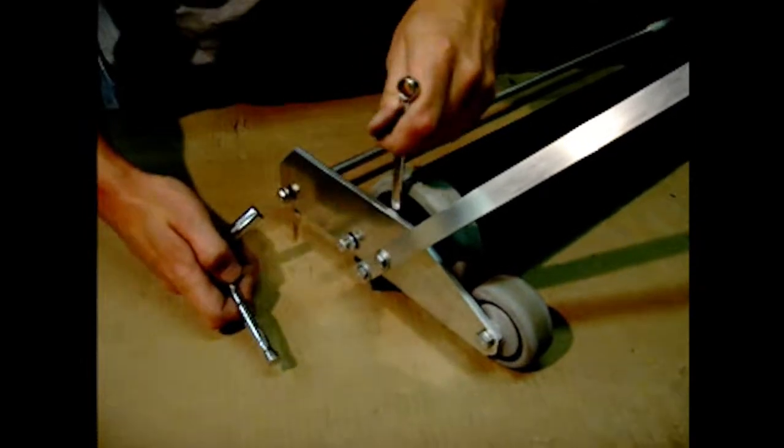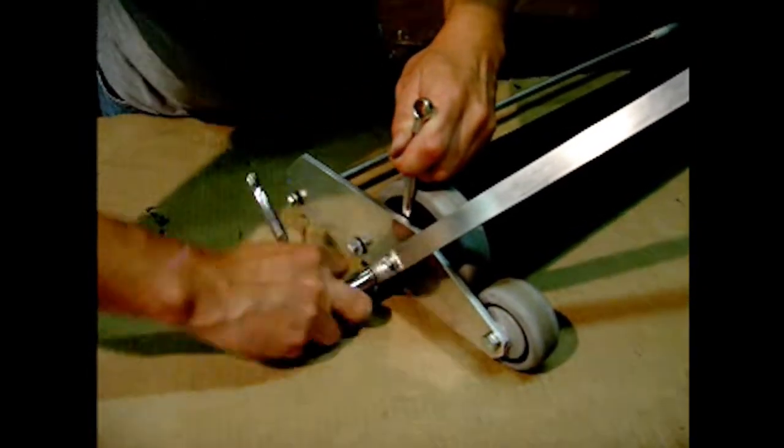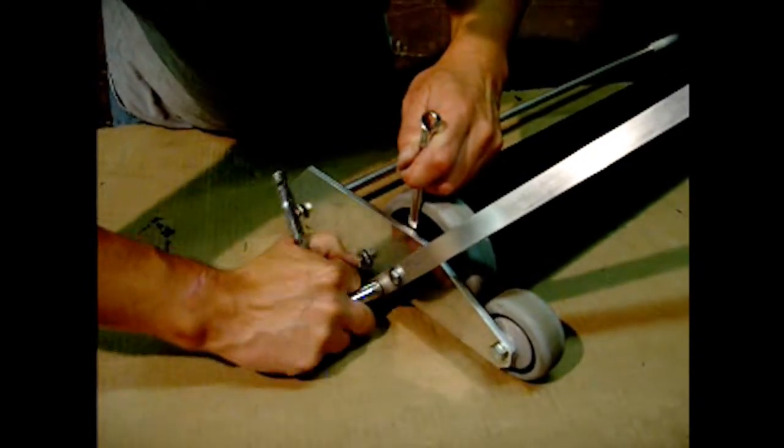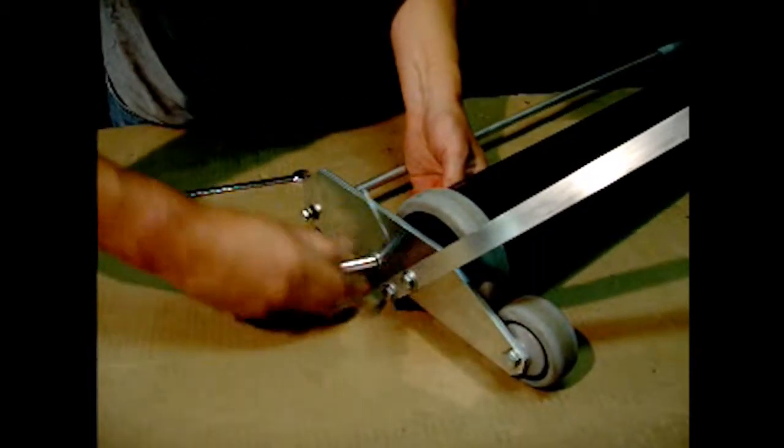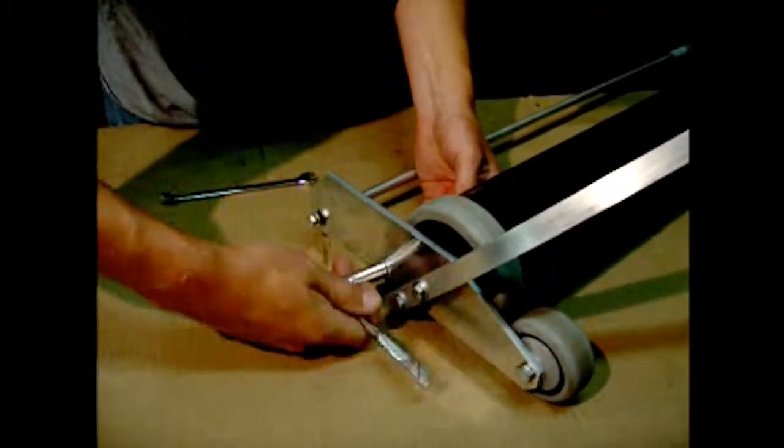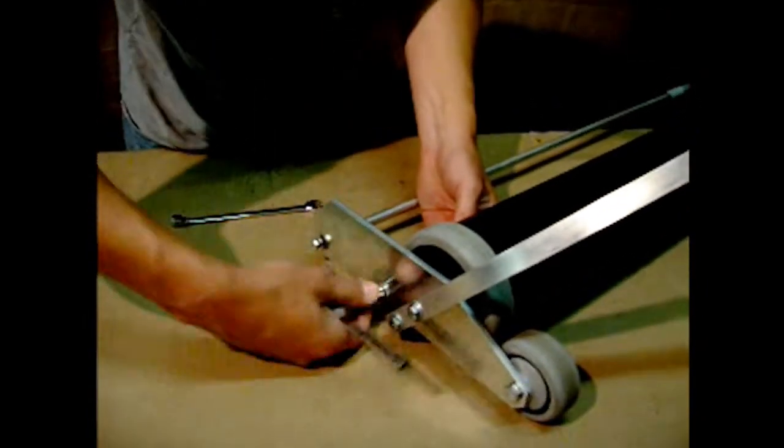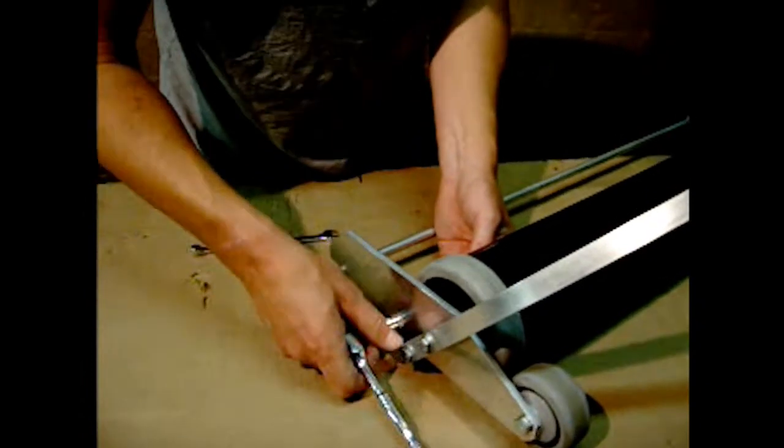And then we'll go ahead and tighten up the bottom nut. Tighten that up firmly. Then you can go ahead and finish off these two sleeve tray supports.